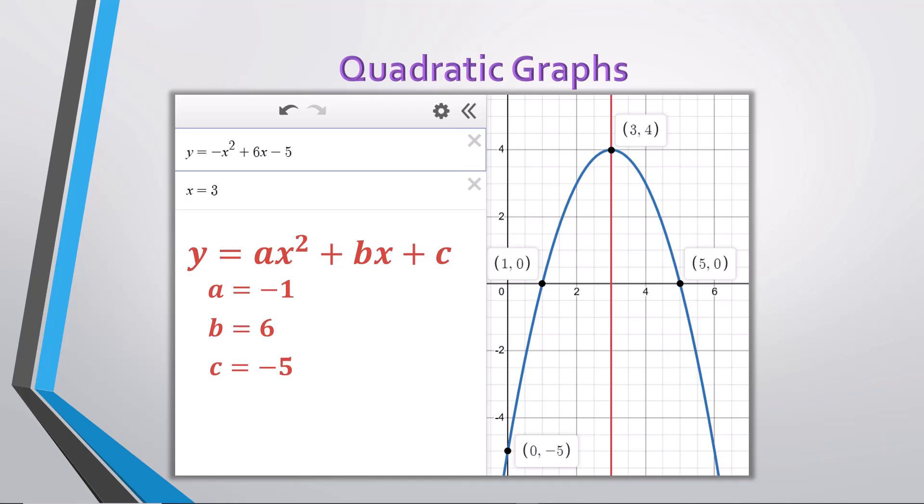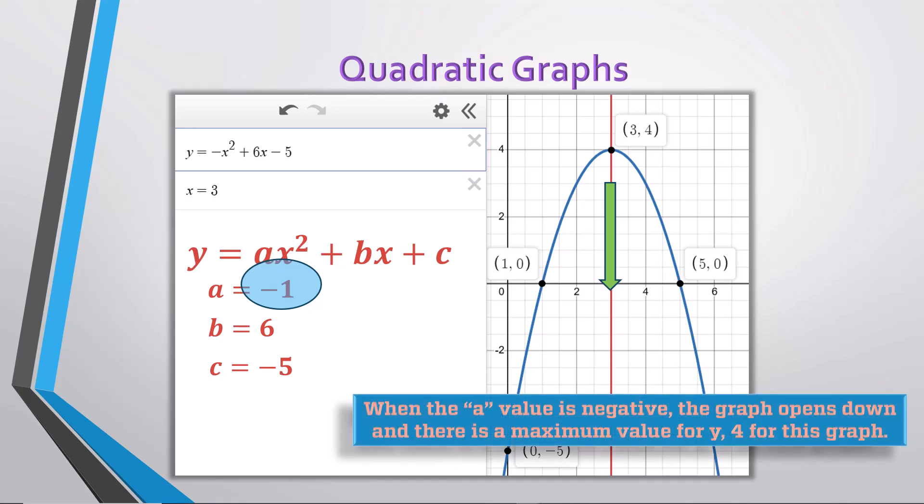There are several other aspects of this graph we need to point out. First, notice this graph is opening down, which you can clearly see, but you can also determine from the equation by looking at the sign of the value a. In this case, the value for a is negative 1, the sign being negative, which causes the graph to open down. This also means there will be a maximum value for y, which is the y-value of the vertex, 4 in this case.